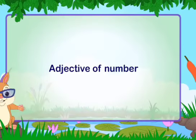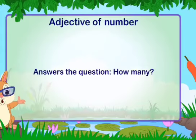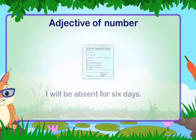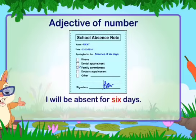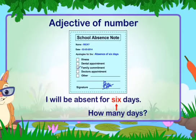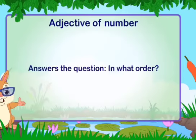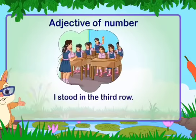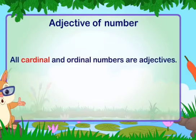Adjective of number: an adjective of number answers the question 'how many?' For example, 'I will be absent for six days' — six answers 'how many days?' It also answers 'in what order?' For example, 'I stood in the third row.' All cardinal and ordinal numbers are adjectives.